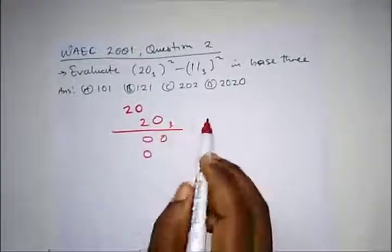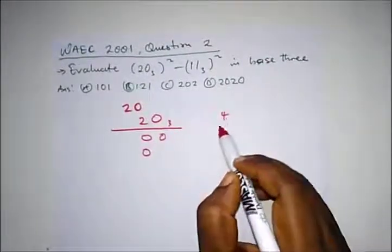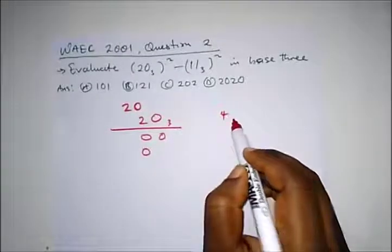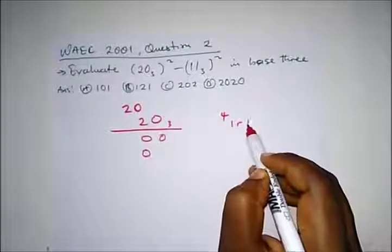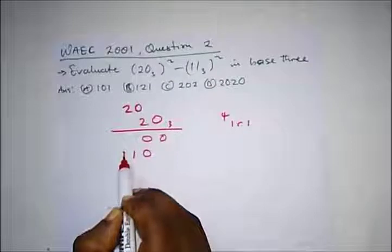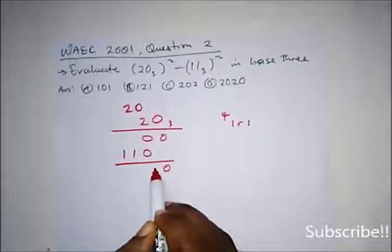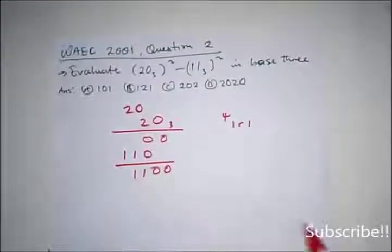Since we are in base 3, 4 divided by 3 gives 1 remainder 1. So we write 1 and carry 1. This gives us the result 0, 0, 1, 1 — that is, 1100 in base 3 for 20 squared.